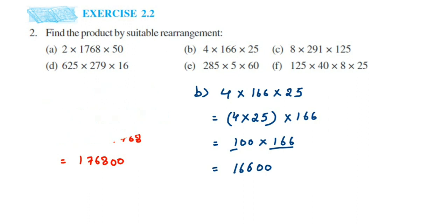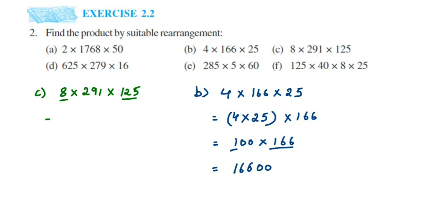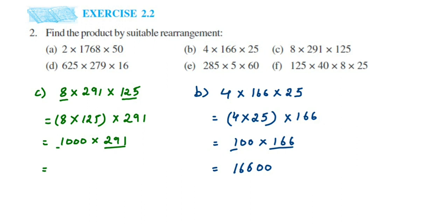In part (c) we have 8 × 291 × 125. Remember, 8 × 125 = 1000. So I'm going to multiply those two first: (8 × 125) × 291 = 1000 × 291. Since 291 × 1 = 291, and 1000 has three zeros, we put those three zeros at the end. The answer is 2,91,000.